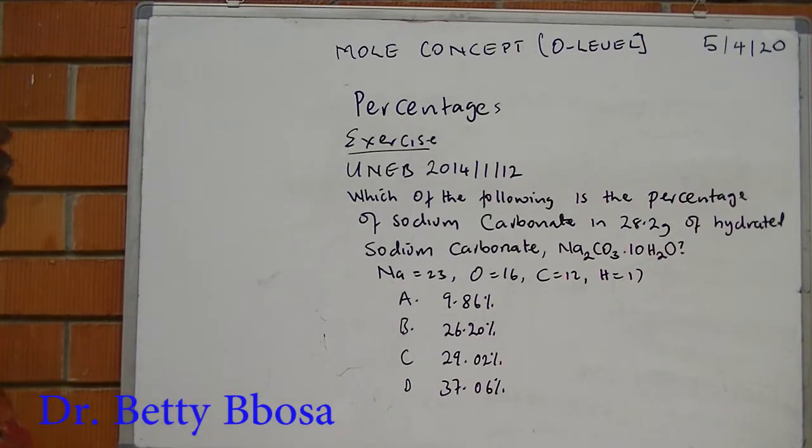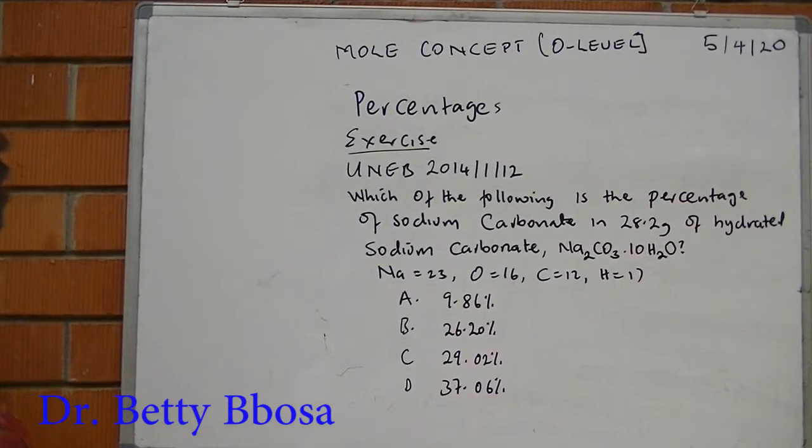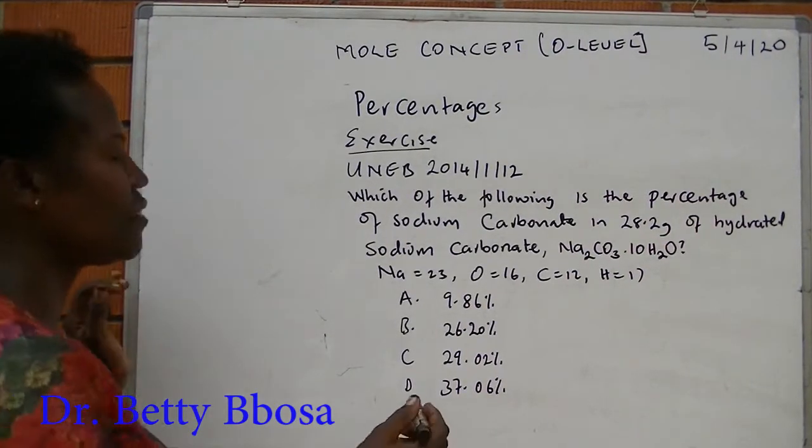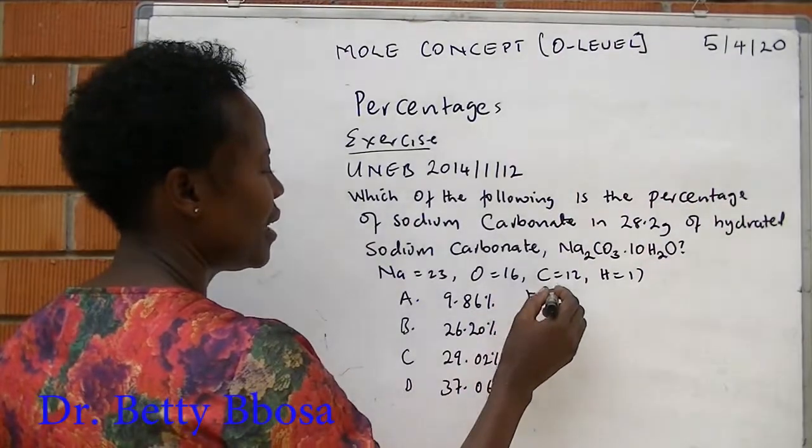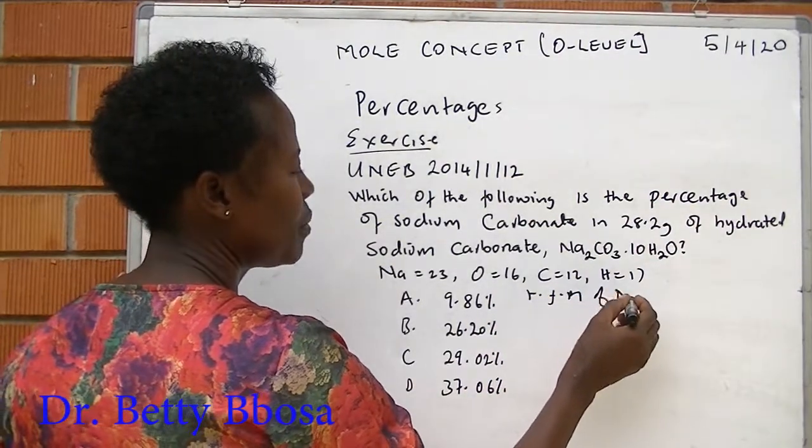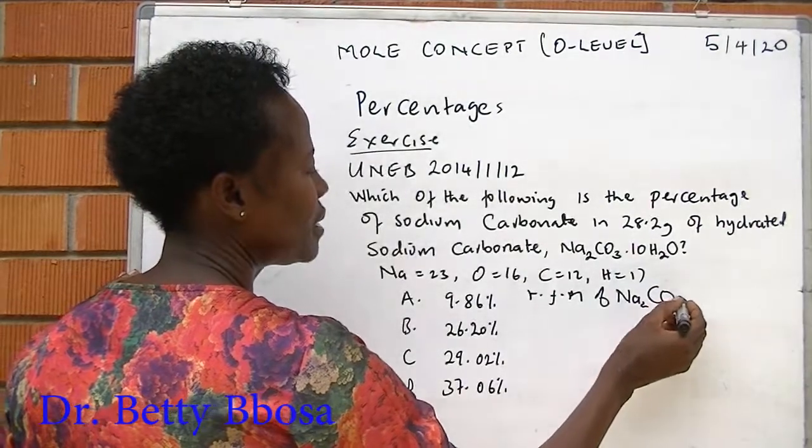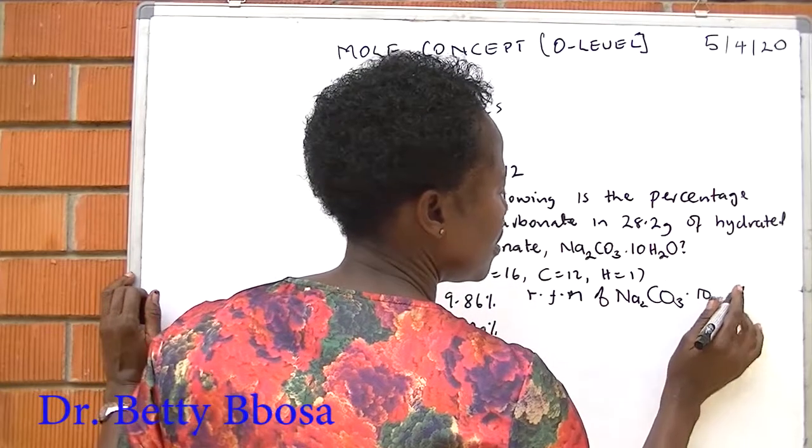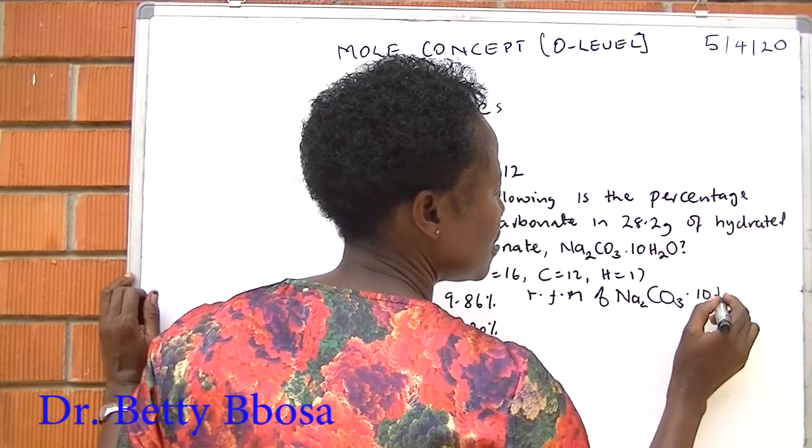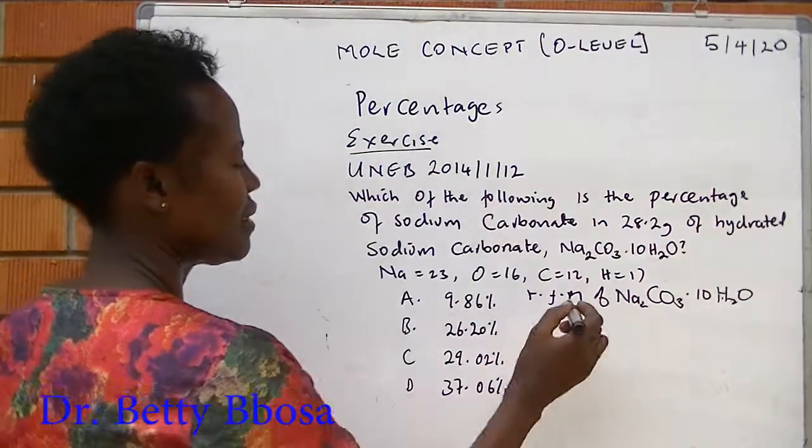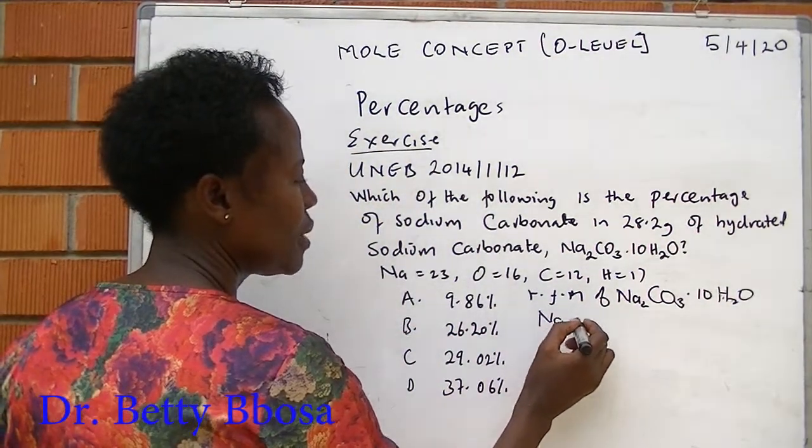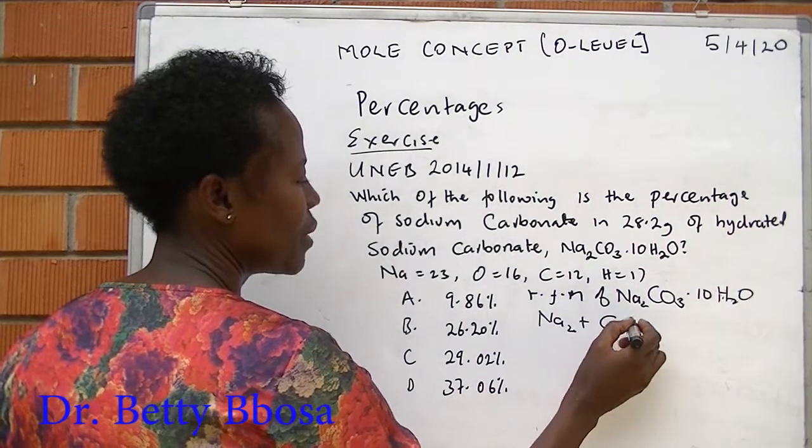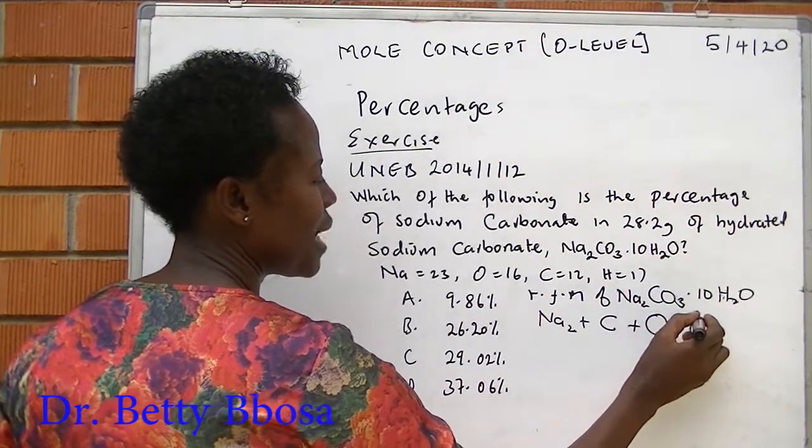Which one of the following is the percentage of sodium carbonate in 28.2 grams of hydrated sodium carbonate? Again, we have to get the RFM of sodium carbonate dot 10 H2O. This is the same mass: sodium plus carbon plus 3 atoms of oxygen plus 10.